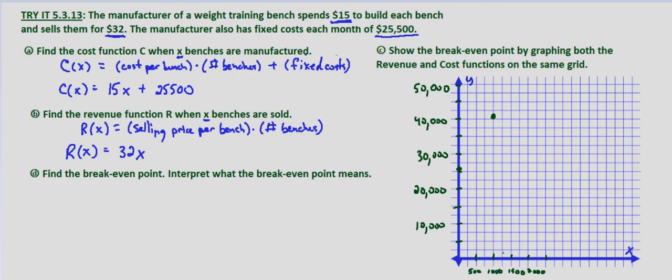At $1,500, I'm looking at $48,000. So here's $1,500, I go up to $48,000, that's going to be right about here. And then we simply connect the dots to get our cost function graphed. So there's our cost function, C of X.